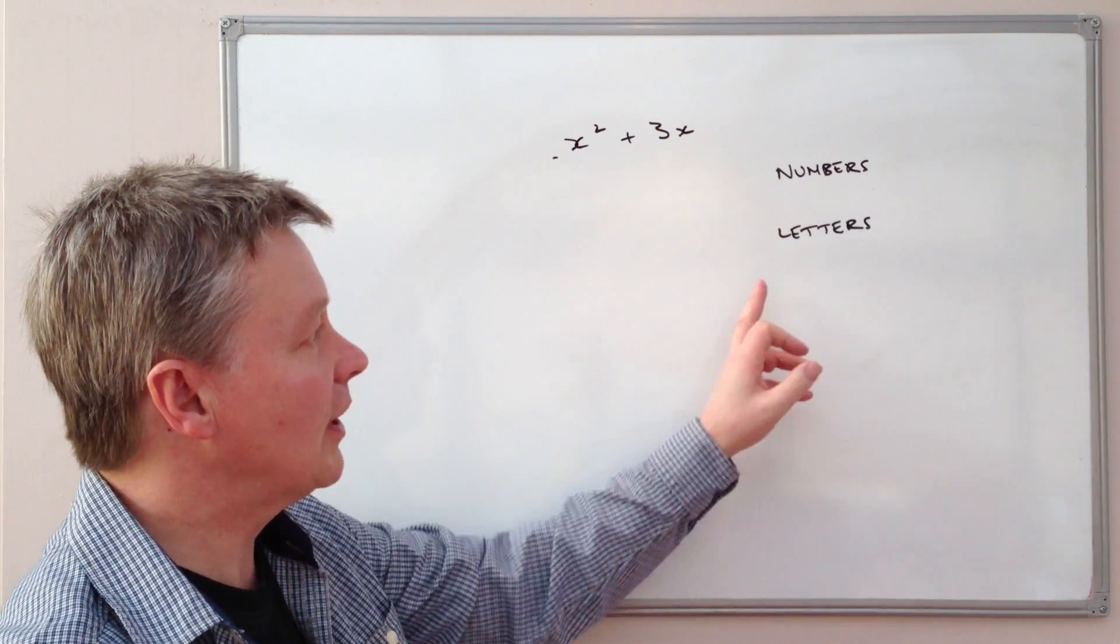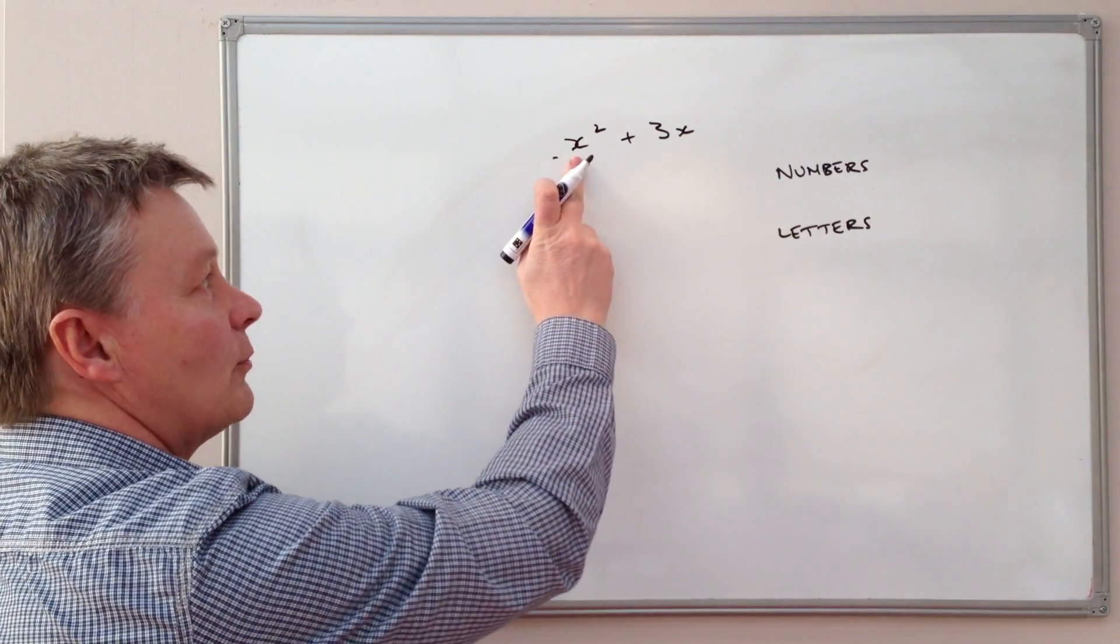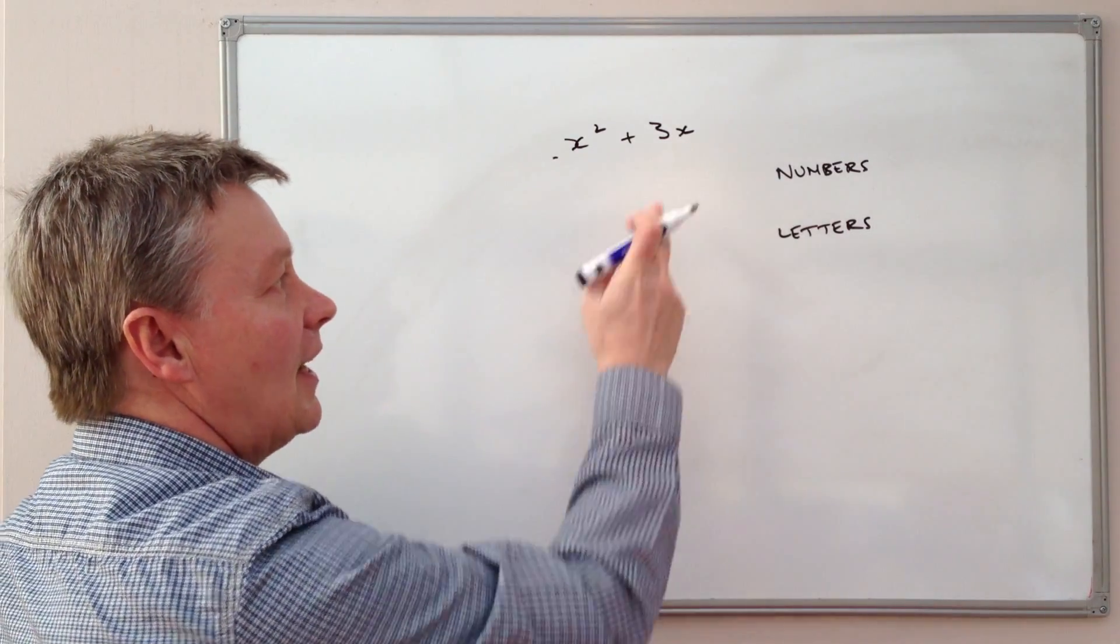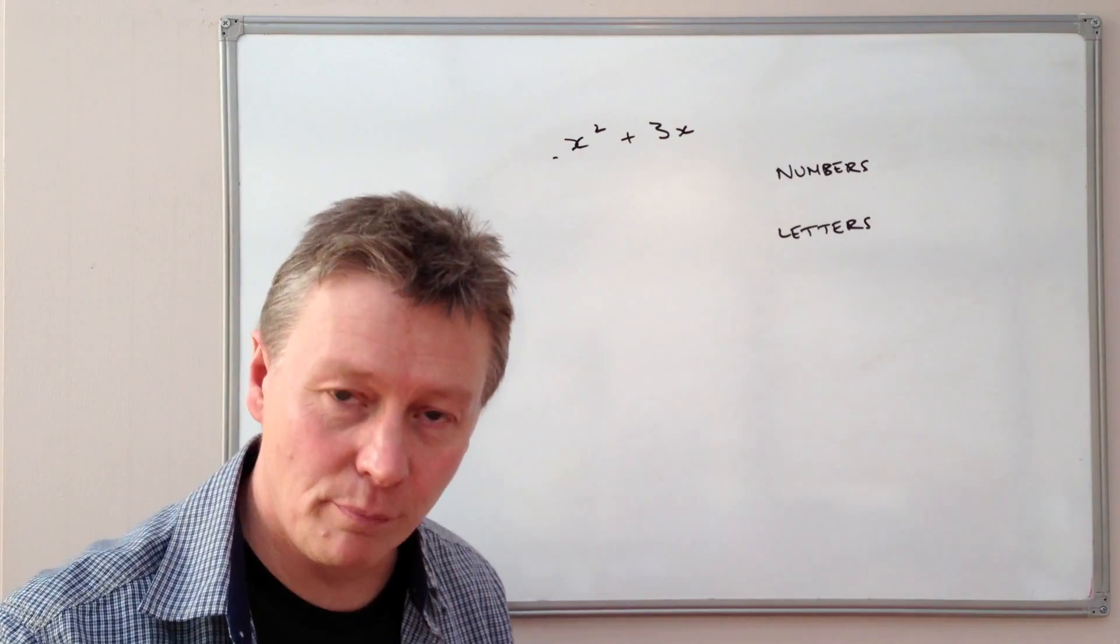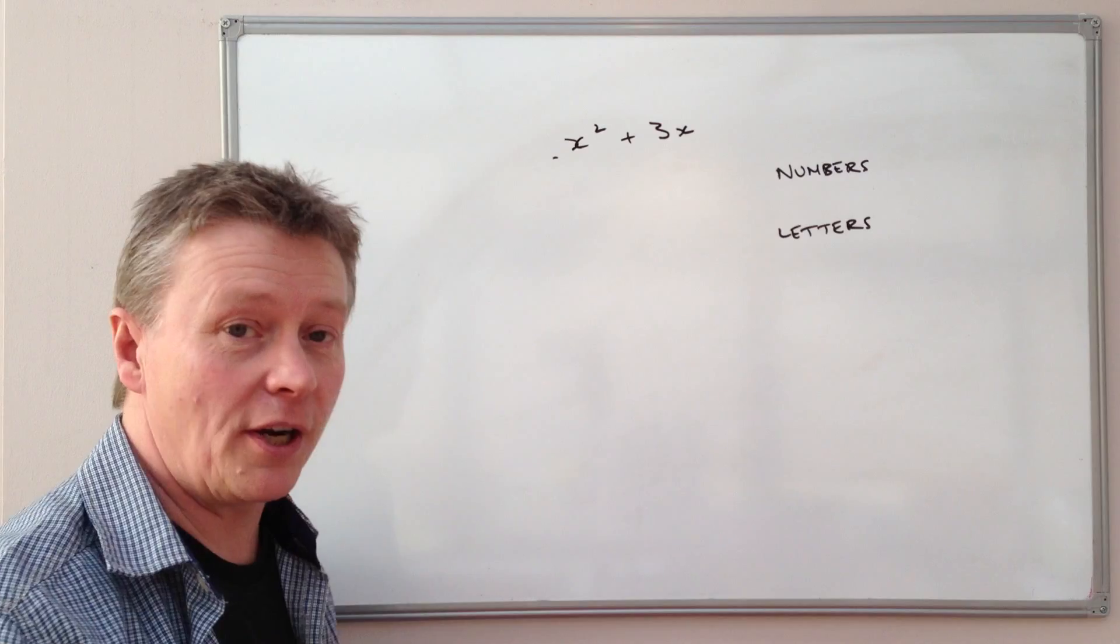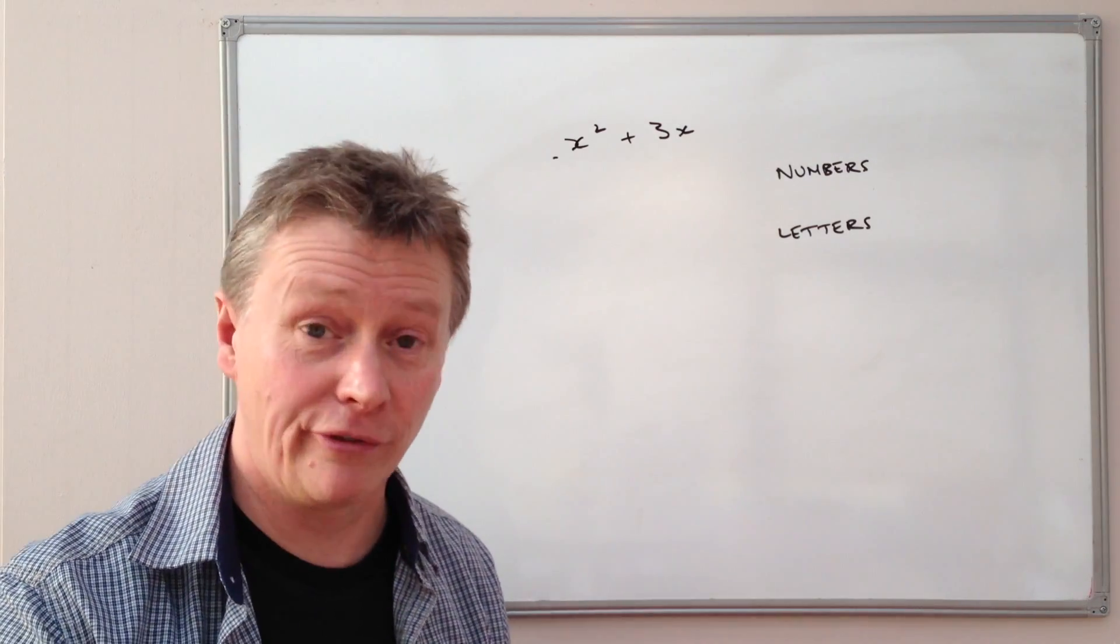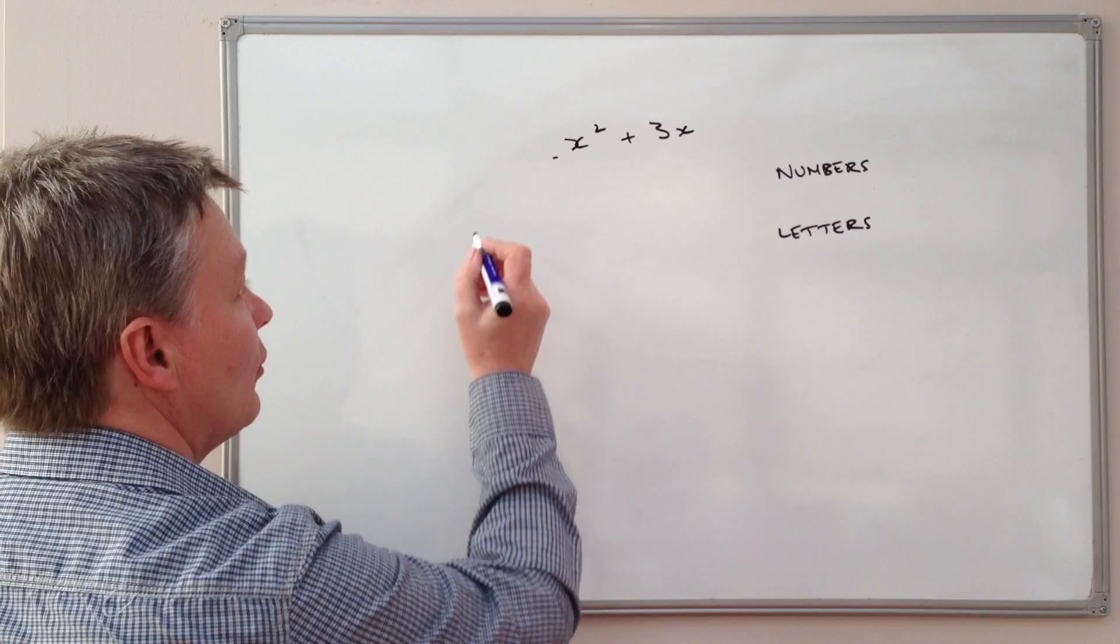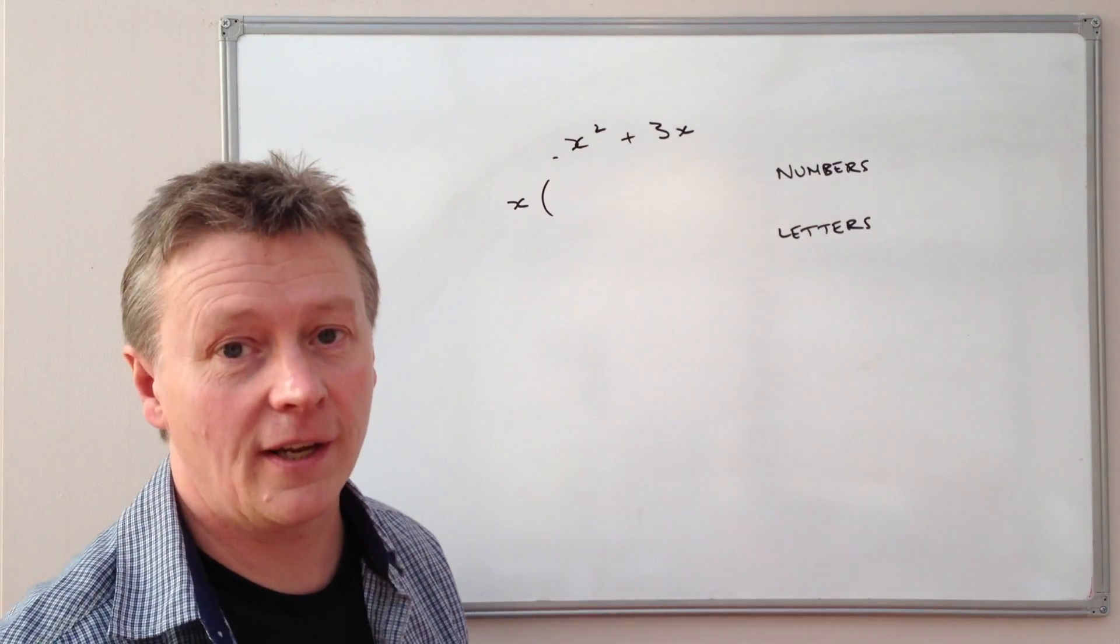So the second thing we'll look at then is letters. And again, if we look at this expression, we have x squared and x. Well, x is common to both terms. So with this particular expression, we can take x, which is the largest possible factor, and put it outside of a set of brackets, which we're going to create.